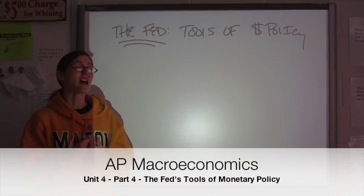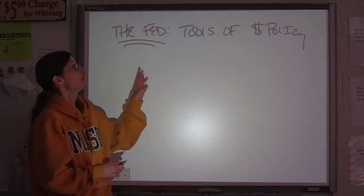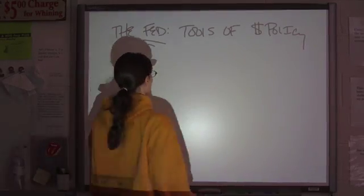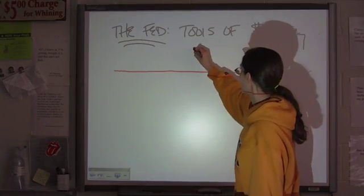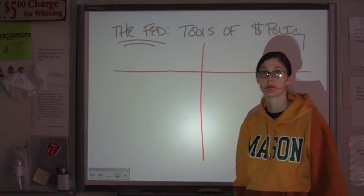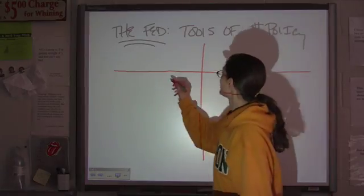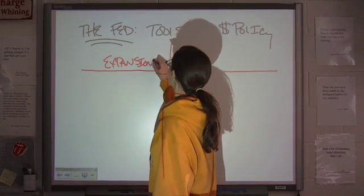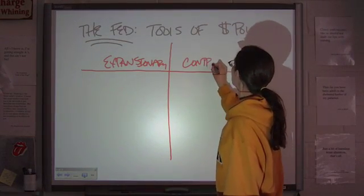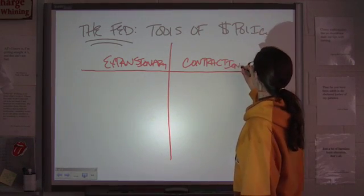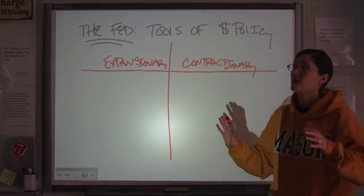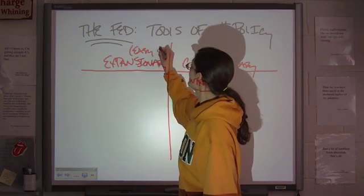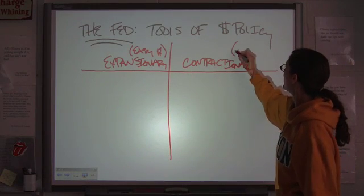Moving into what the Fed can actually do to manipulate the money supply, we need to look at the Fed's tools of monetary policy — and we have three of them. We're going to put these into two big categories: expansionary and contractionary money policy. Expansionary policies are also called easy money, and contractionary policies are called tight money.